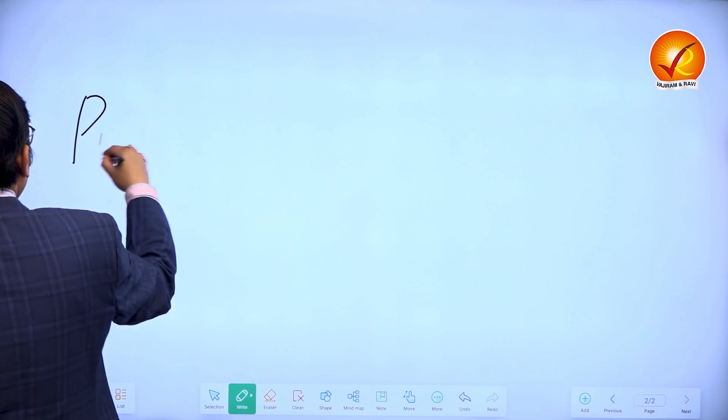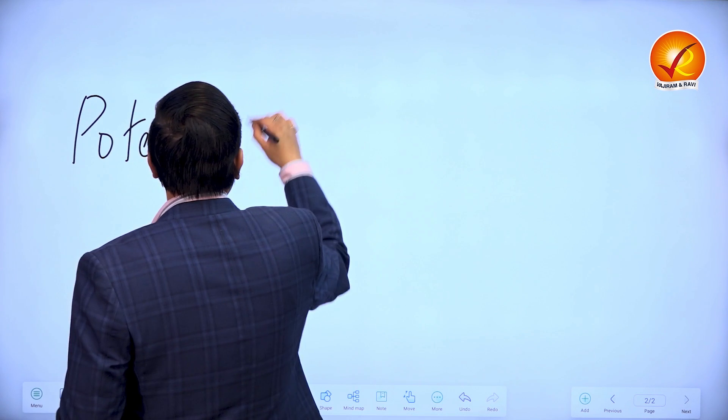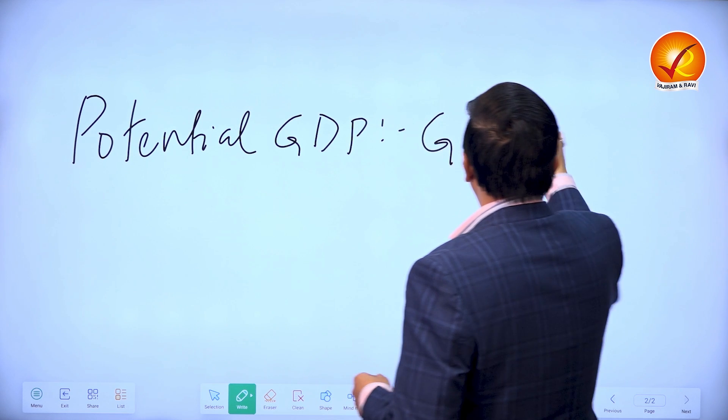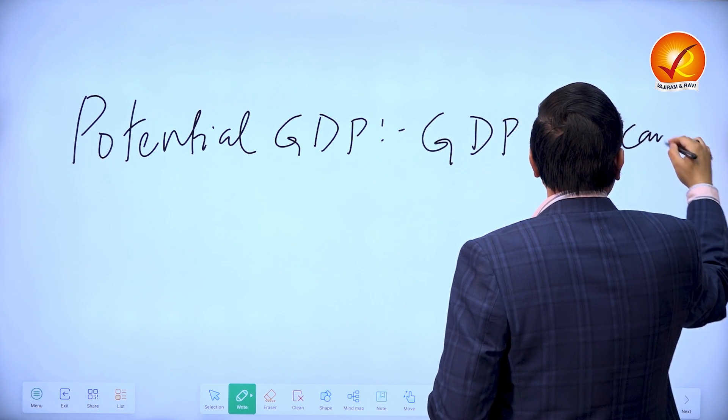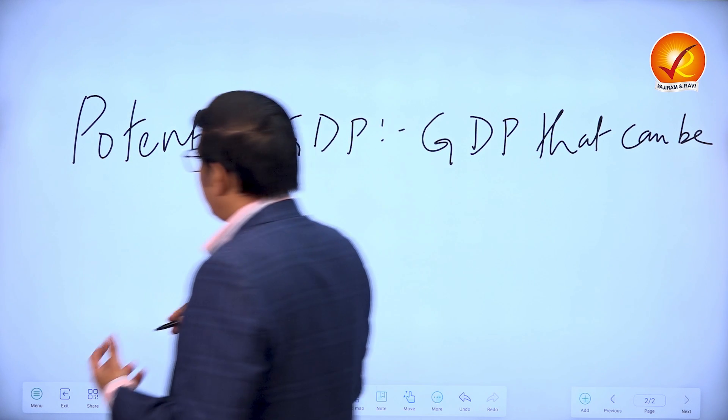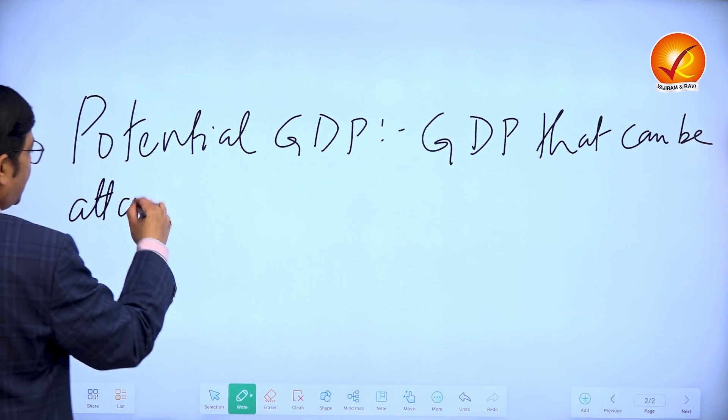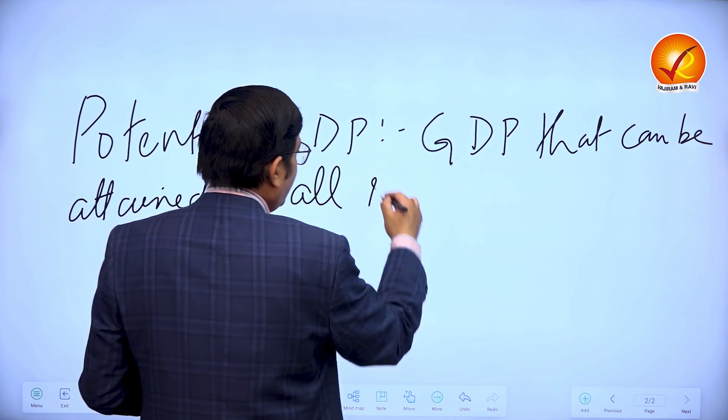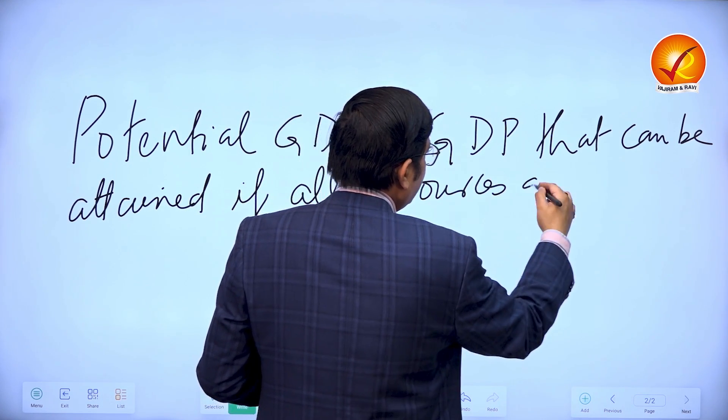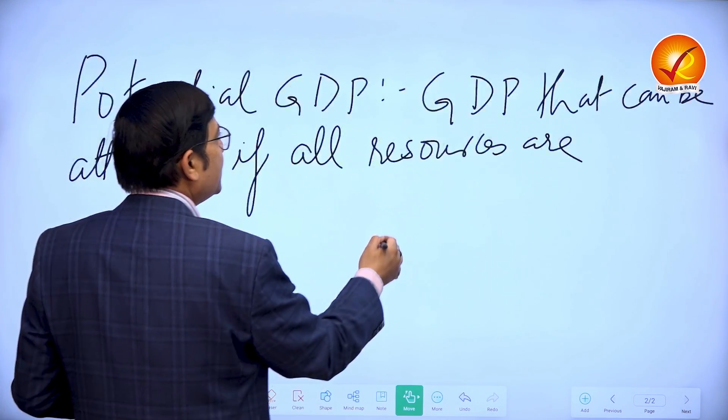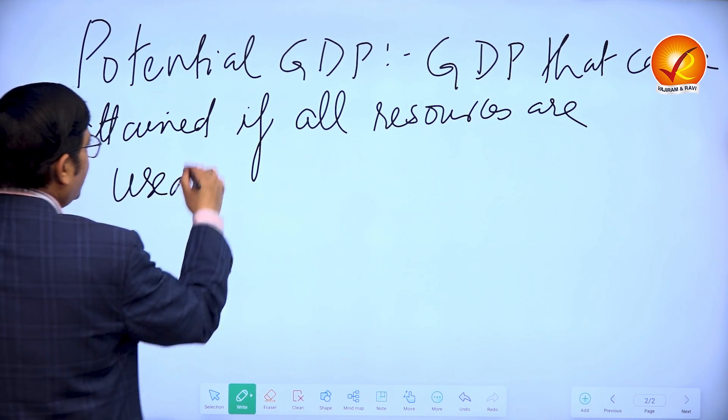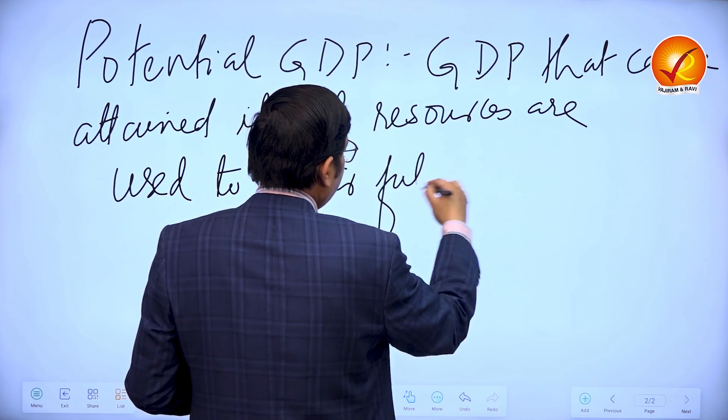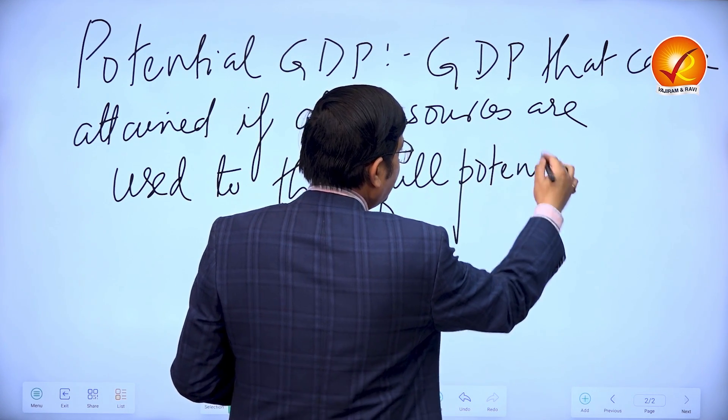Potential GDP means the GDP that can be attained. Actual is what is actually attained. Potential is that which can be attained if all resources are used to the full potential, hence the name potential GDP.